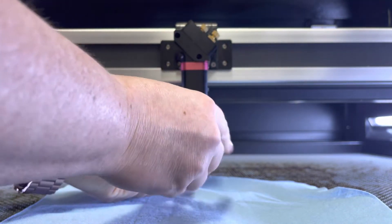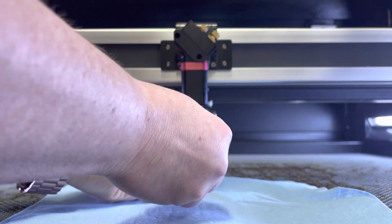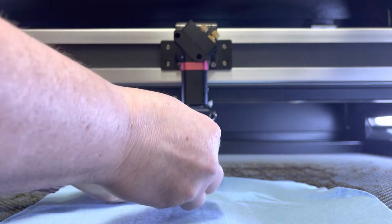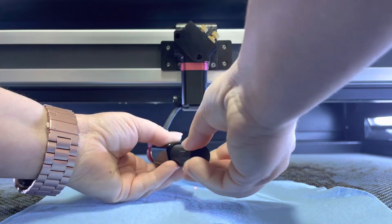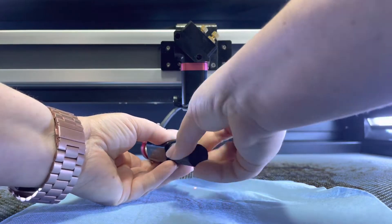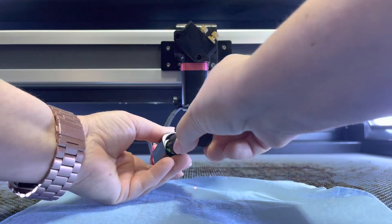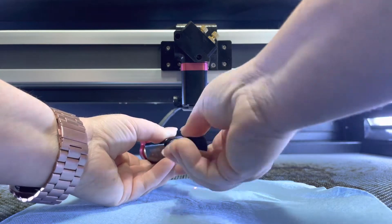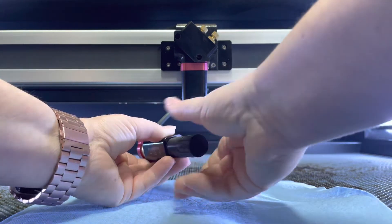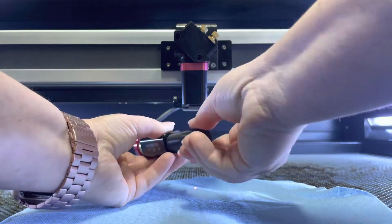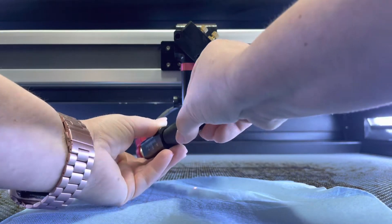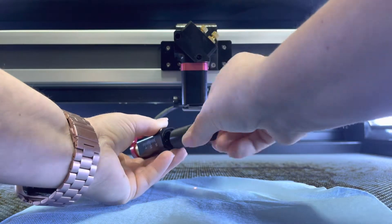You're just going to unscrew that very carefully and take your lens out. Sorry, my arm is in the way, but now you're going to be able to see. This can be a little tricky, just have patience and you can get this little piece out.